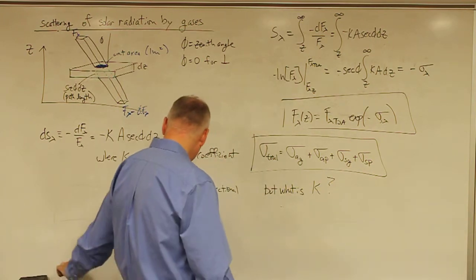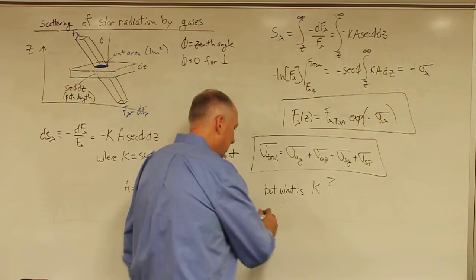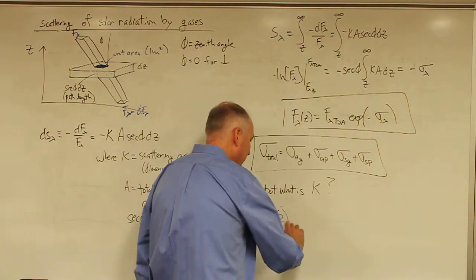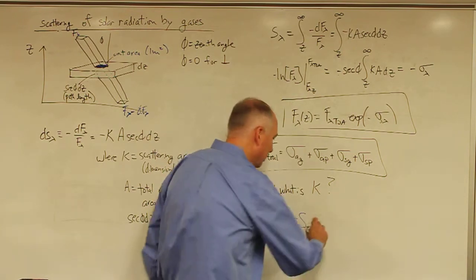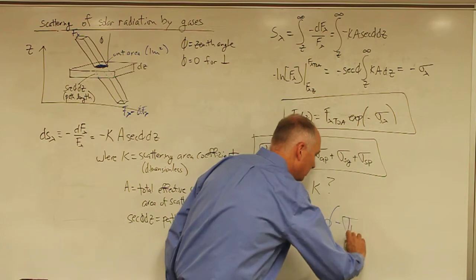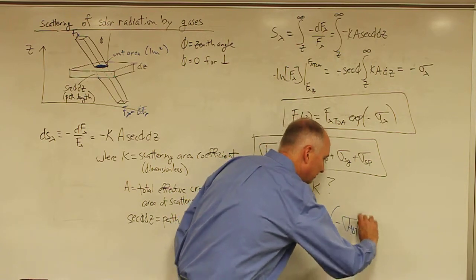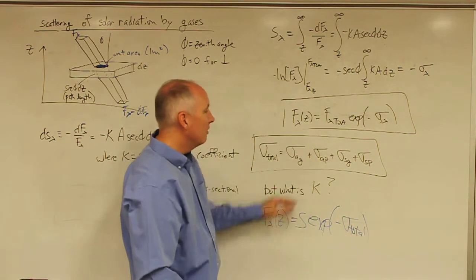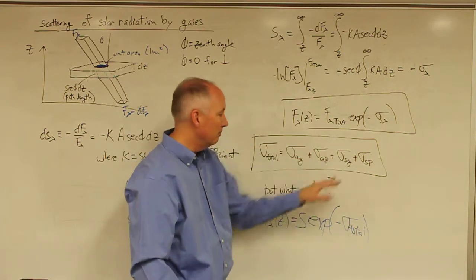And you can put this together in the Beer's Law in that the f of lambda at some height is equal to the solar constant times the exponent minus the optical depth of the total atmosphere. And so we have a functional form of the Beer's Law that includes all of these individual components.